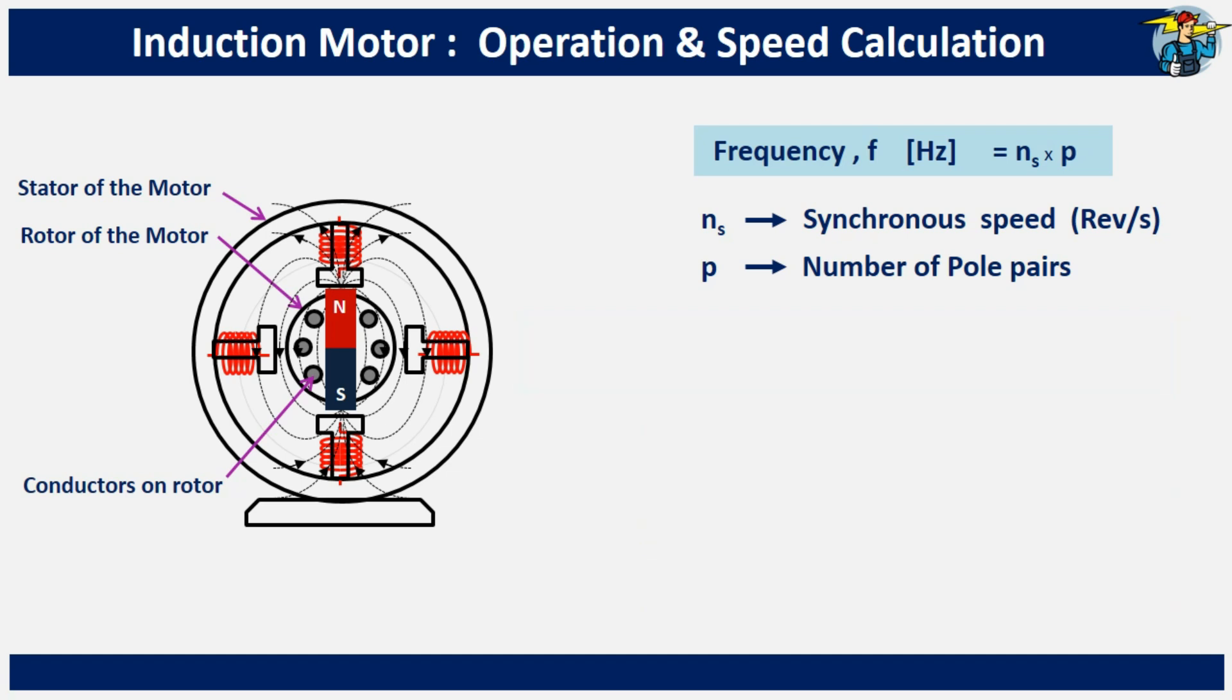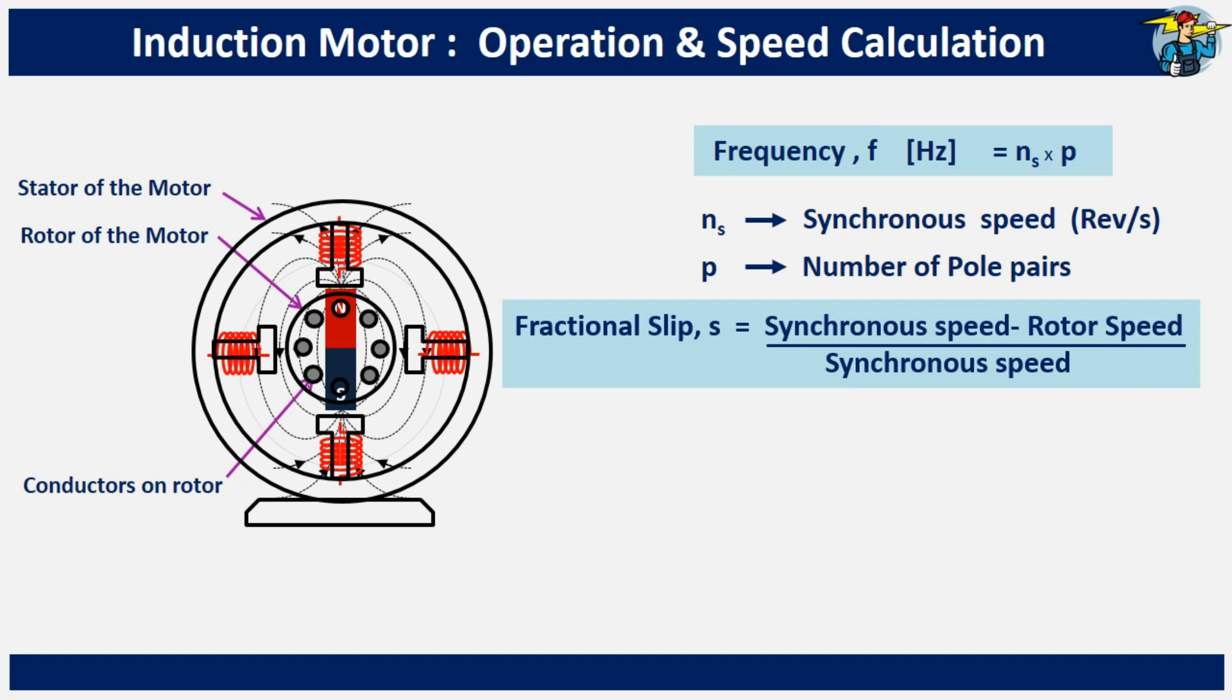As we noted earlier, in practice, the rotor tends to run a bit slower than the synchronous speed to ensure there is always driving torque on its conductors. This speed difference between the rotor and the rotating magnetic field is known as the slip of the motor. It is more common to refer to slip as fractional slip, which is dimensionless and calculated by taking the difference between the two speeds and dividing by the synchronous speed.